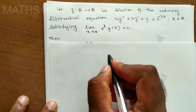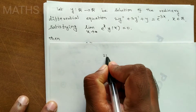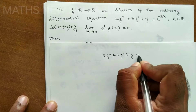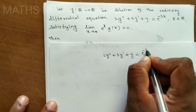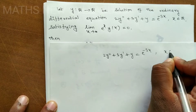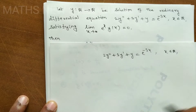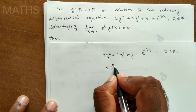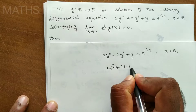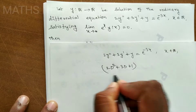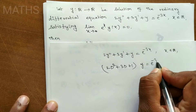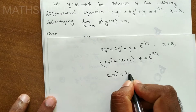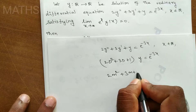Given: second order differential equation 2y'' + 3y' + y = e^(-3x) for all x in R. We write this as (2D² + 3D + 1)y = e^(-3x). To find the complementary function, solve the auxiliary equation: 2m² + 3m + 1 = 0.